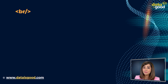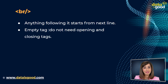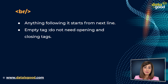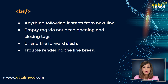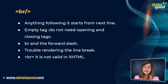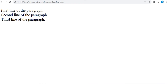Now we have the BR tag. Whenever we use the BR element, anything following it starts from the next line. This tag is an example of an empty element where you do not need opening and closing tags, as there is nothing to go in between them. The BR tag has a space between the characters 'br' and the forward slash. If you omit this space, older browsers will have trouble rendering the line break. If you miss the forward slash and just use 'br', it is not valid in XHTML.